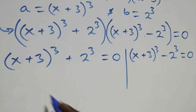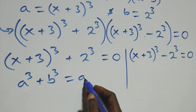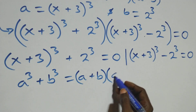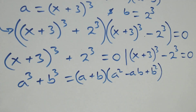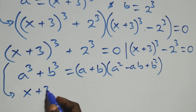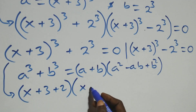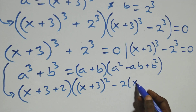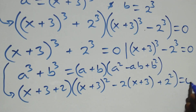Then solving on this side, this follows: when we have a cubed plus b cubed, it is the same thing as (a plus b) into brackets, open brackets, a squared minus ab plus b squared. So what we have here, it becomes: (x plus 3 plus 2) into brackets, open brackets, (x plus 3) squared minus 2 times (x plus 3), then plus 2 squared, close brackets, equals to 0 here.